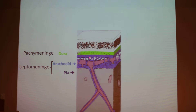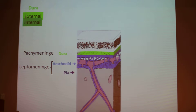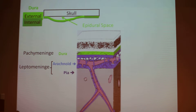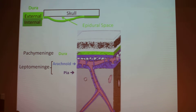The vessels are penetrating into the brain, followed by CSF and pia. If you look more closely at the dura, you can see that there are two layers: the external layer that is glued to the skull, and an internal layer.